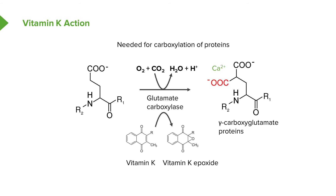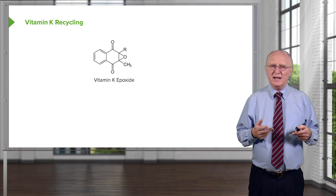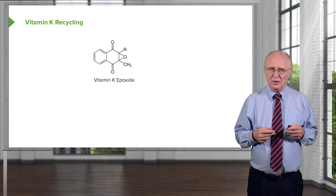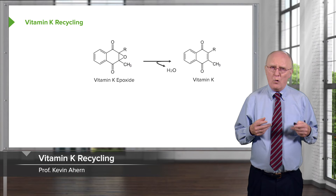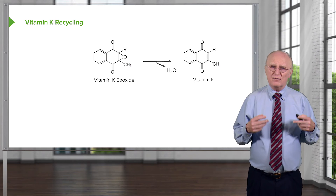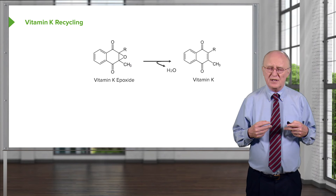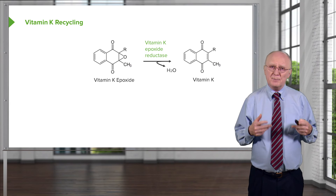In order for vitamin K to function in the body, it has to be reconverted back to its original form by an enzyme. If that reconversion doesn't occur, the body will eventually run out of vitamin K and the person will lose the ability to clot blood. So the recycling of vitamin K epoxide — that oxygen-containing molecule — is very critical. Recycling is essential for the body to have the clotting factors it needs. The reaction involves the loss of water from vitamin K epoxide to regenerate vitamin K, and it is catalyzed by the enzyme known as vitamin K epoxide reductase.